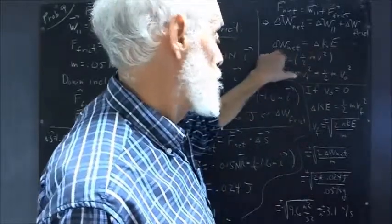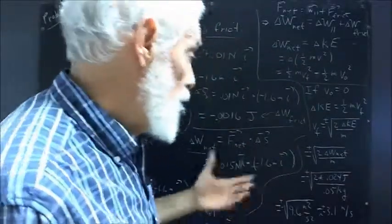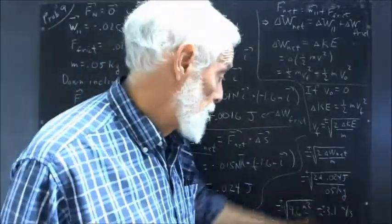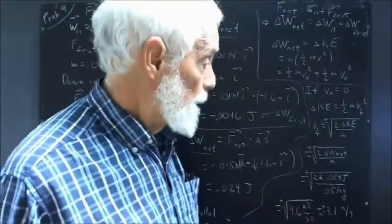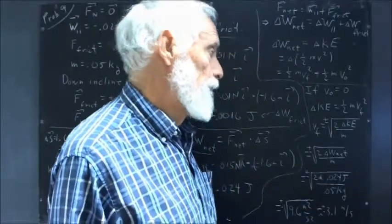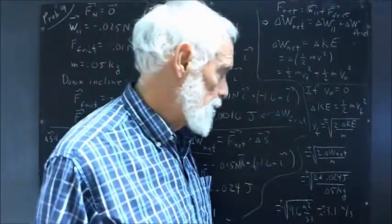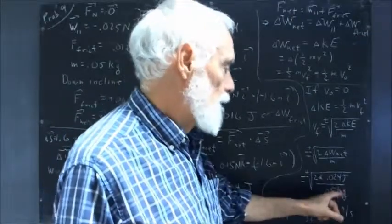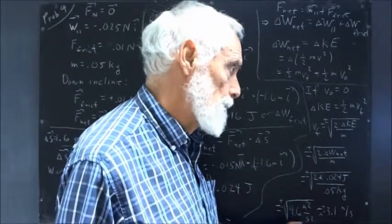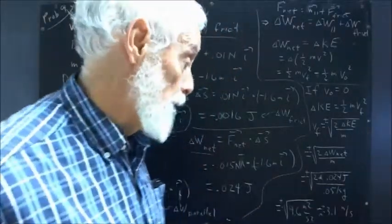So the final velocity is the square root of 2KE over m, which is easily obtained here. And that's going to be plus or minus 2 times the ΔW_net divided by m, because the change in kinetic energy is the amount of work done on this interval. And we plug the numbers in. We do the calculation. Being careful about the units. Remember, a joule is a newton times a meter. A newton is a kilogram meter per second squared. So a joule is a kilogram meter squared per second squared. Divide that by a kilogram, we end up with meters squared per second squared.